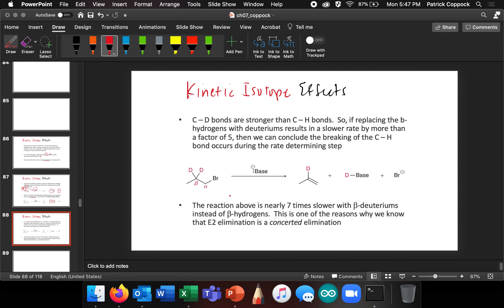So carbon-deuterium bonds are actually stronger than carbon-hydrogen bonds. So if we replace the beta hydrogens with deuteriums, it results in a slower rate by more than a factor of five. It turns out it's actually seven times slower, but you can say it's a lot slower.